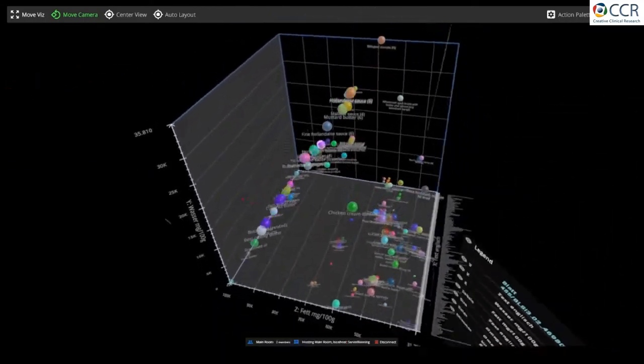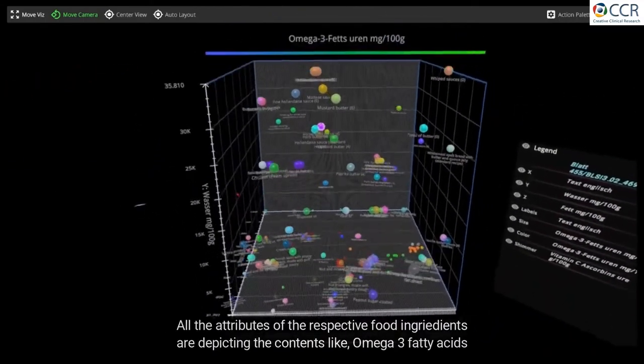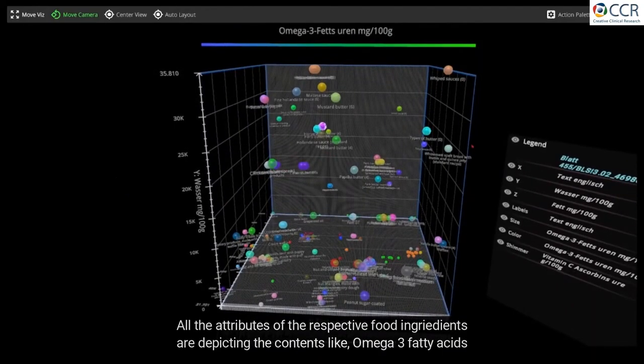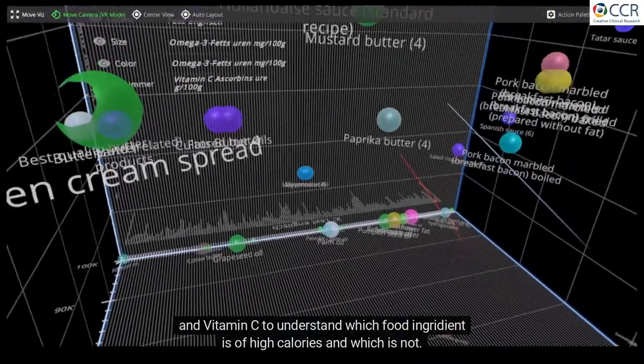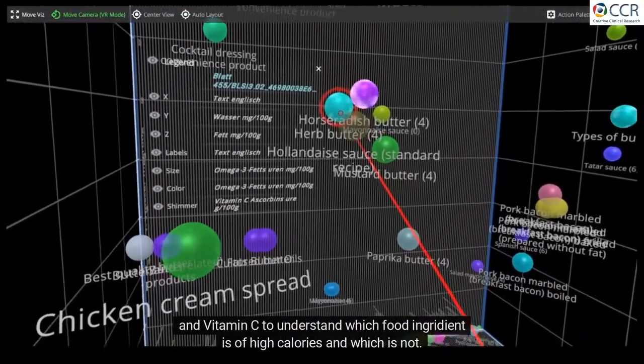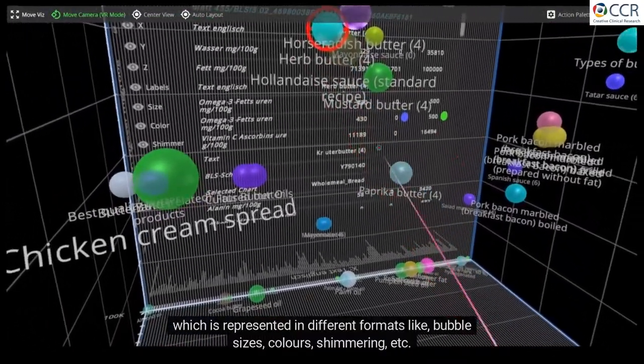All the attributes of the respective food ingredients are depicting the contents like omega-3 fatty acids and vitamin C, to understand which food ingredient is of high calories and which is not, which is represented in different formats like bubble sizes, colors, shimmering, etc.